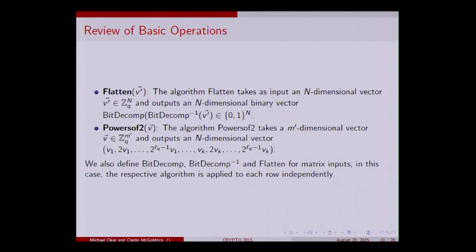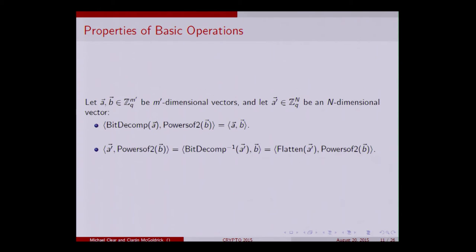These algorithms can also be defined over matrix inputs — instead of taking vectors, they take matrices and apply the algorithm to every row. Two useful properties: first, the inner product of BitDecomp of a vector with PowersOfTwo gives their inner product; second, the inner product of Flatten of a vector with PowersOfTwo of another vector gives their product. These properties will be useful later.